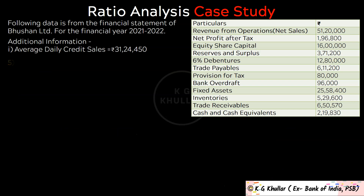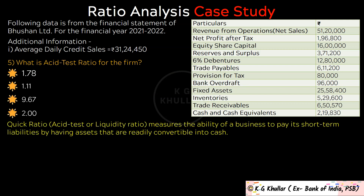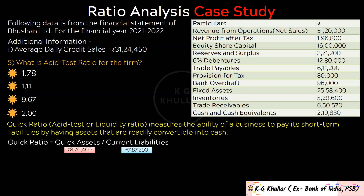The next question is: What is acid test ratio for the firm? The quick ratio, also known as acid test ratio or liquid ratio, measures the ability of a business to pay its short-term liabilities using assets readily convertible into cash. Quick ratio = quick assets divided by current liabilities = (current assets minus inventory minus prepaid expenses) divided by current liabilities. That is (Rs. 14,00,000 minus Rs. 5,29,600) divided by Rs. 7,87,200 equals 1.11. The correct option is option B.